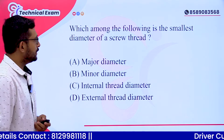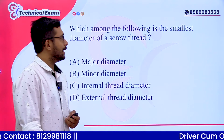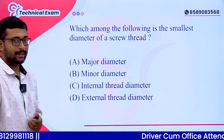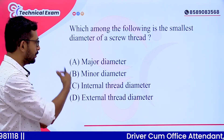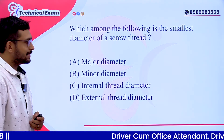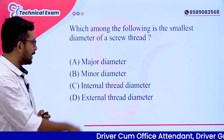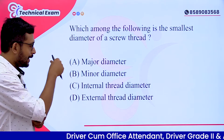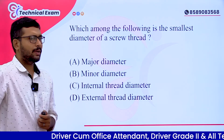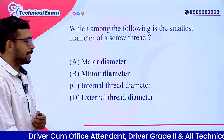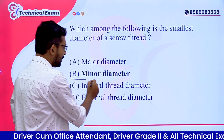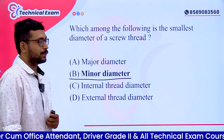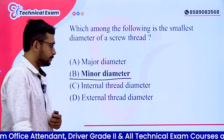Which among the following is the smallest diameter of a screw thread? Options: A. Major Diameter, B. Minor Diameter, C. Internal Thread Diameter, D. External Thread Diameter. The smallest diameter is called Minor Diameter. Option B is correct.